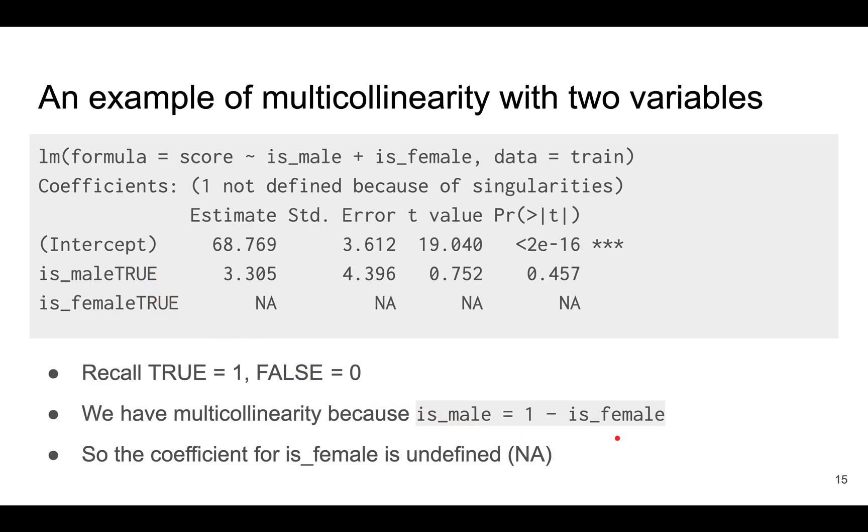There's actually an equation showing how they're related. Because there's perfect multicollinearity, the estimated coefficients are just NA for is_female.